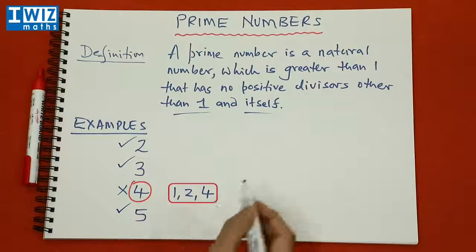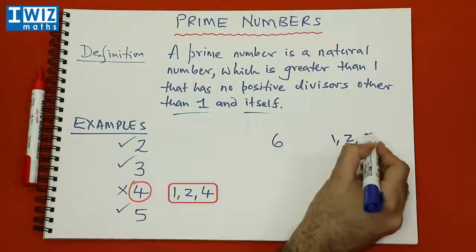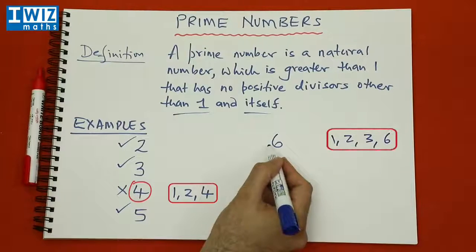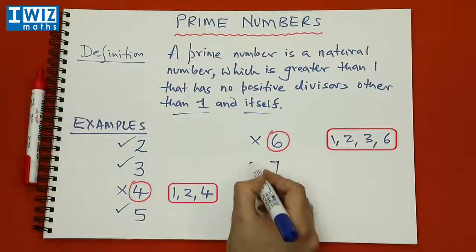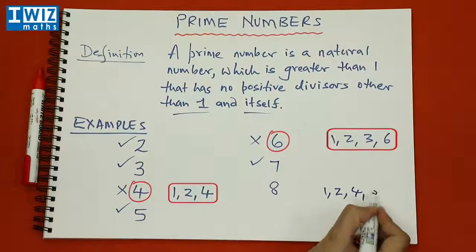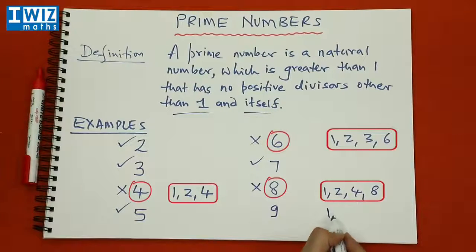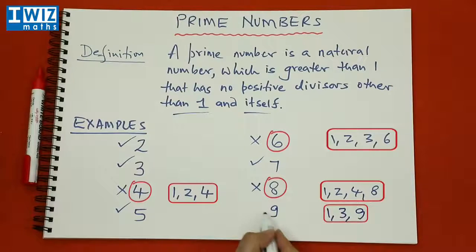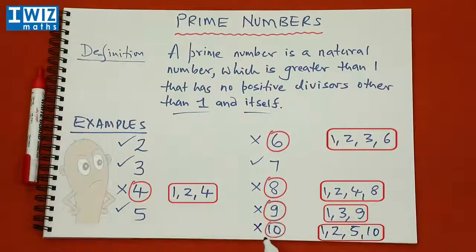Looking at six, the divisors are one, two, three, and six, so six is not a prime. For seven, the only divisors are one and seven, so seven is a prime. For eight, the divisors are one, two, four, and eight, so eight is not a prime. For nine, the divisors are one, three, and nine, so nine is not a prime number. For ten, the divisors are one, two, five, and ten, so ten is also not a prime number.